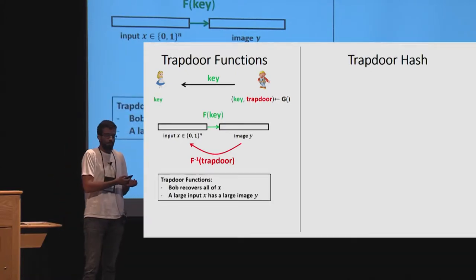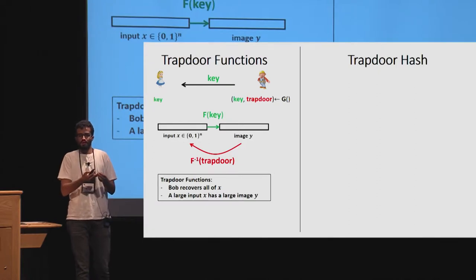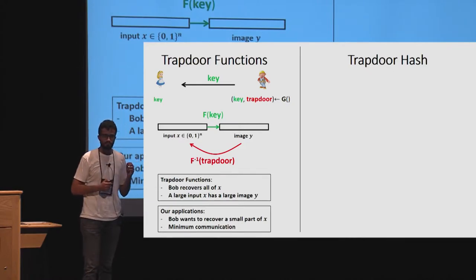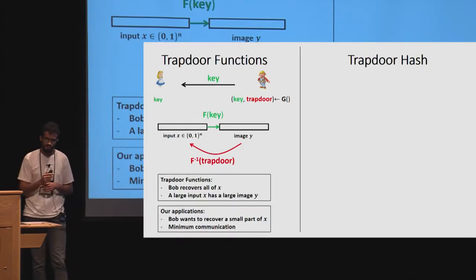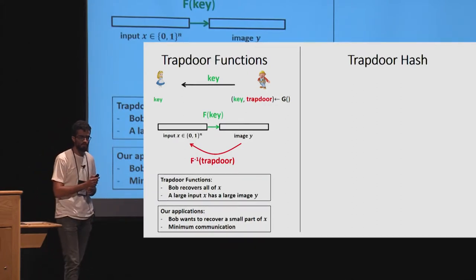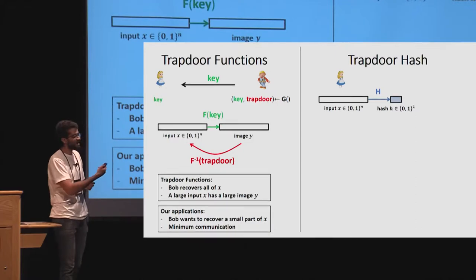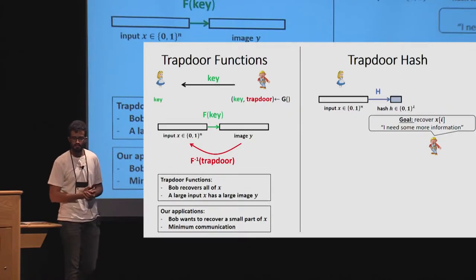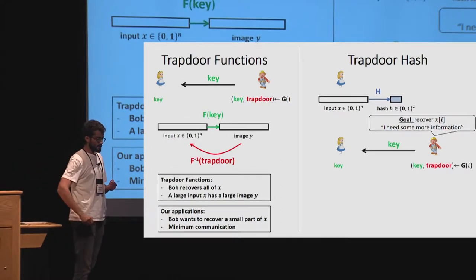Trapdoor functions allow Bob to recover the entire pre-image of y, but information-theoretically y has to be at least as large as x. In our applications, it's enough for Bob to learn only a small part of x — we want to minimize communication. That's where trapdoor hash functions are useful: they allow Alice to compute a very small image of her input x, called the hash value h. Bob wants to learn only one bit — say, the i-th bit of x — and information-theoretically he needs something beyond just the hash value.